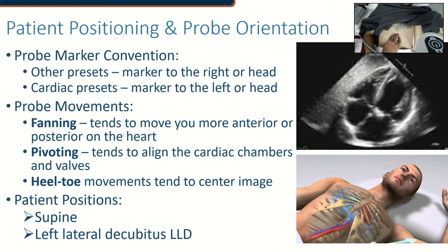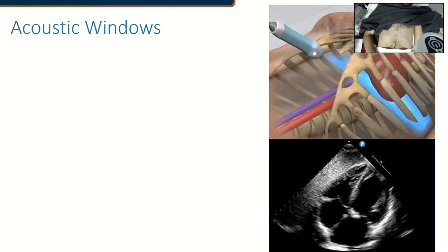When we think about the patient themselves, we currently have them in the supine position. If we wanted to, we could get them to raise their arm above their head on the left side and roll onto their left side in order to bring the thoracic wall and the heart closer together using gravity. That's called a left lateral decubitus position — LLD or LLDP.